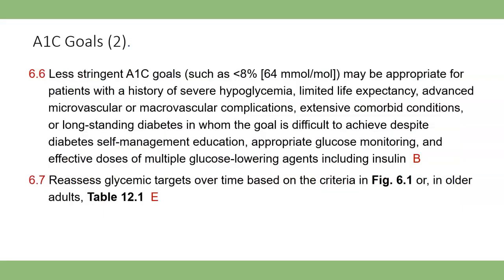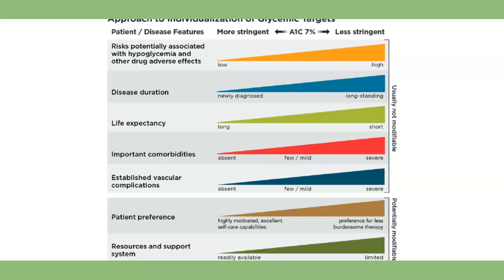Less stringent A1C goals, such as less than 8, may be more appropriate for some patients. If you have an elderly person who is at more risk for hypoglycemia, maybe you want them on the higher side. This is an important table — it helps determine where the A1C should be. You'll see A1C targets at 7.7, 7.0, less stringent, more stringent — and you go down the line based on the risks associated with hypoglycemia.